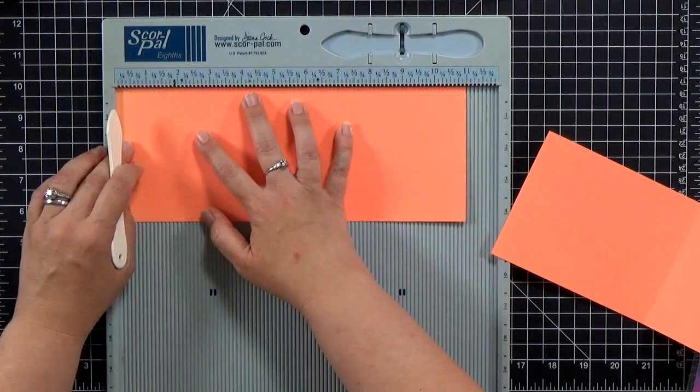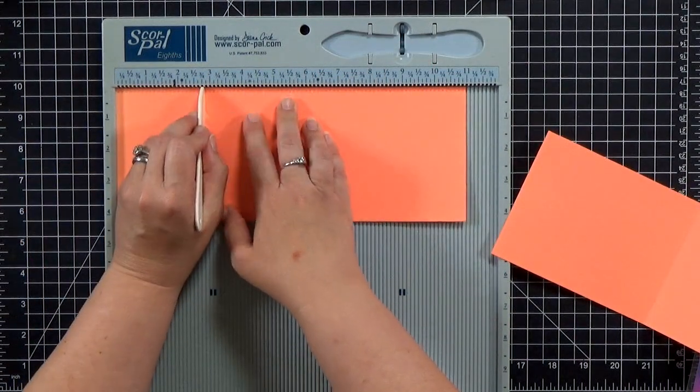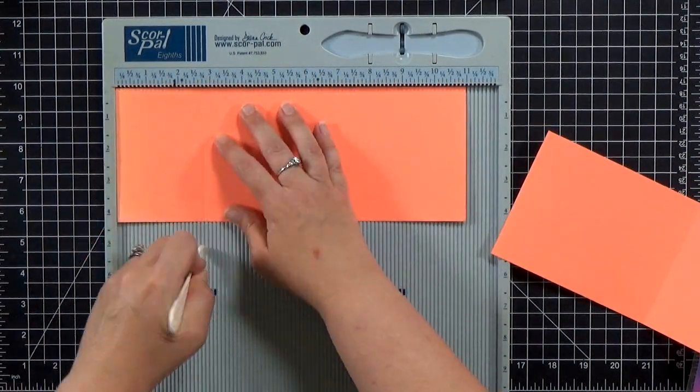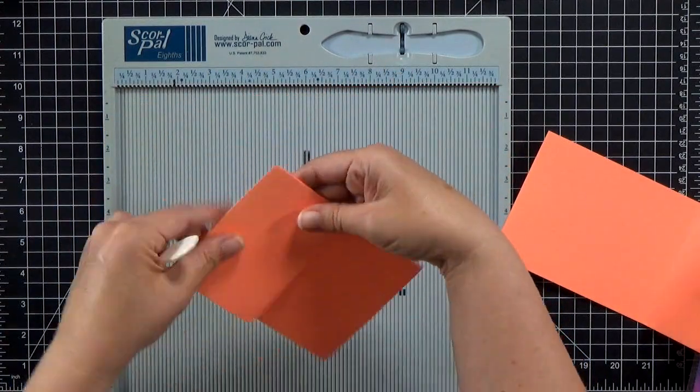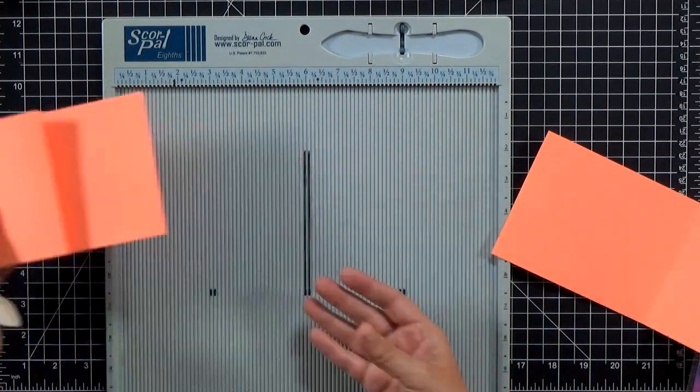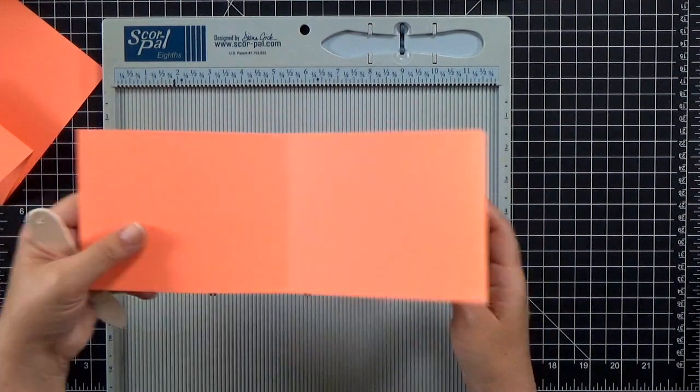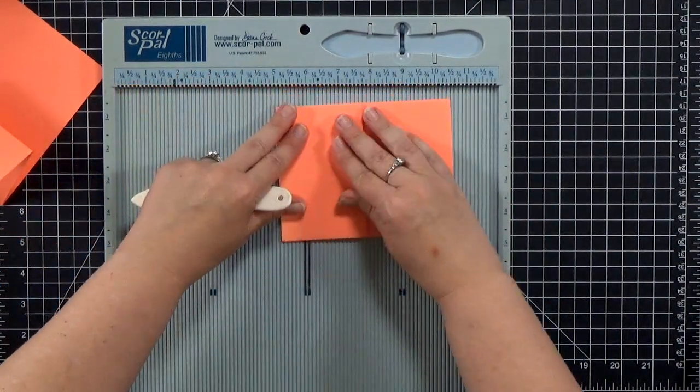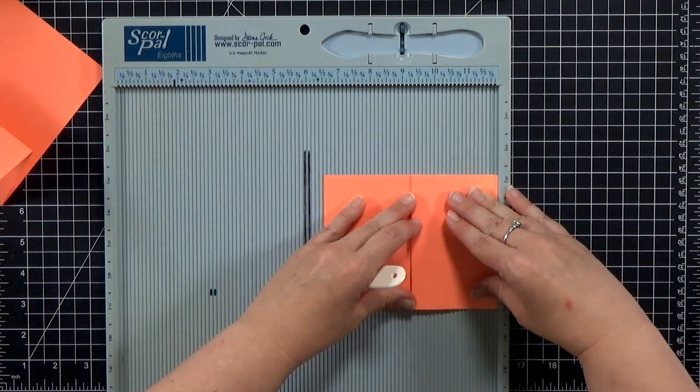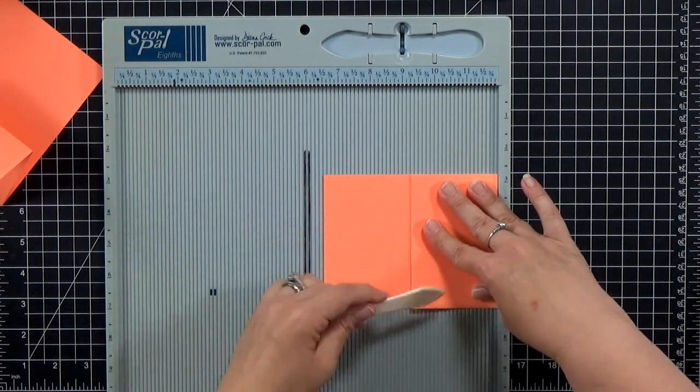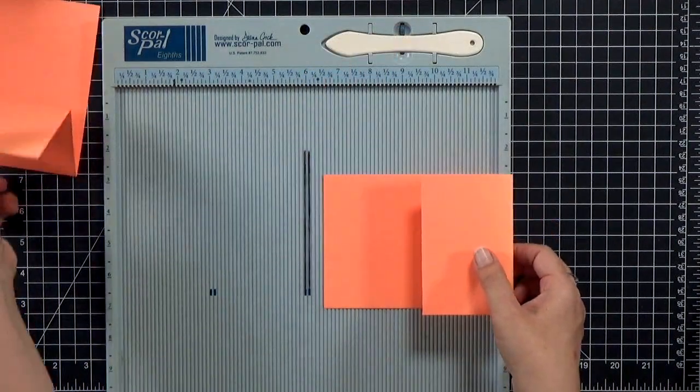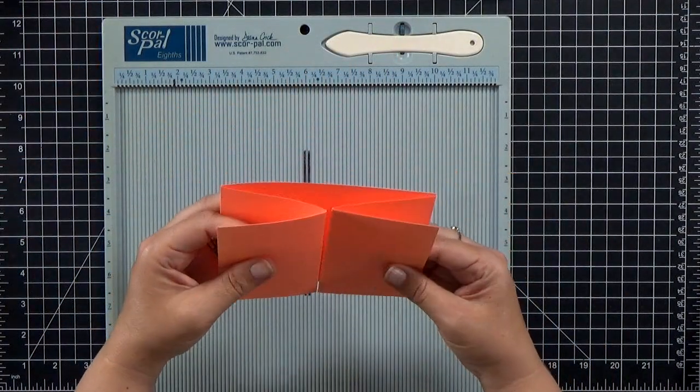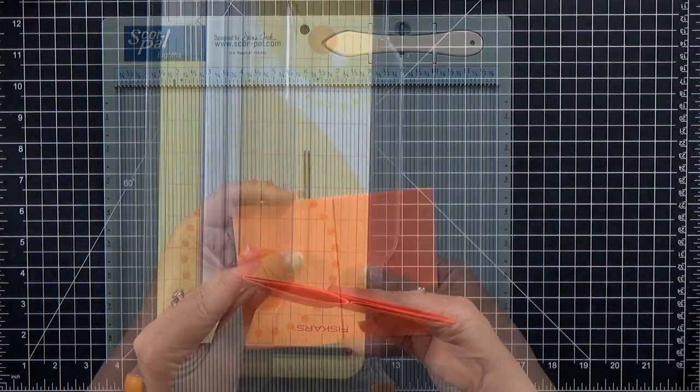Now I'm going to put them back in my score pal and I'm making sure that I have that faded edge to the left there. And then I scored it at two and three quarters of an inch and folded it back on itself. And I'll do the same thing for the other side. So score at two and three quarters of an inch so that it's basically folding the front part in half.